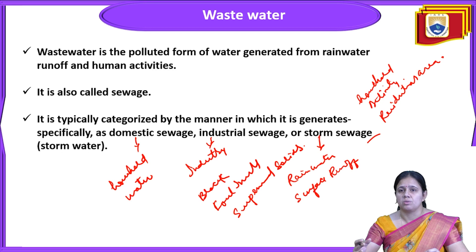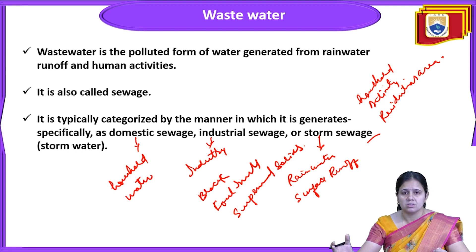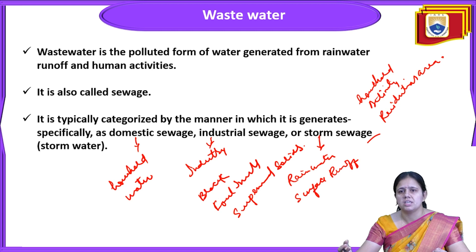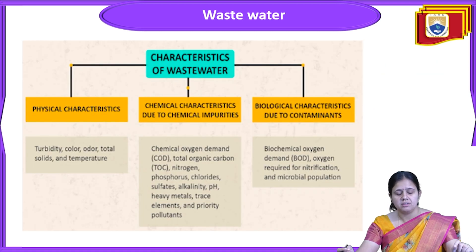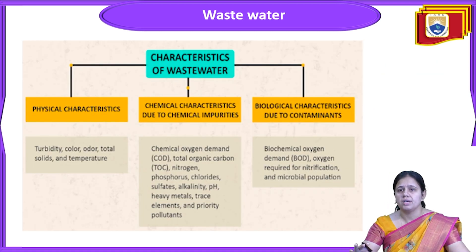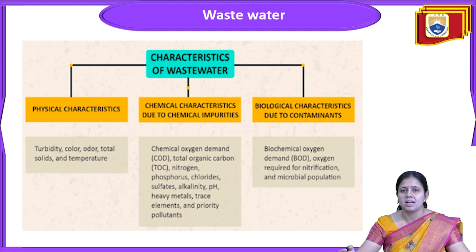This is the basic introduction about wastewater. Wastewater is the polluted form of water that can be generated from industry, hospitals, residential activity, or rainwater runoff. It is categorized into domestic sewage, industrial sewage, or stormwater. Now, the characteristics of wastewater — how can we categorize it? It is broadly divided into three categories: physical characteristics, chemical characteristics, and biological characteristics.